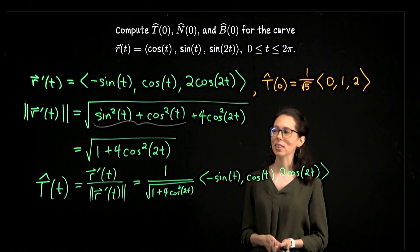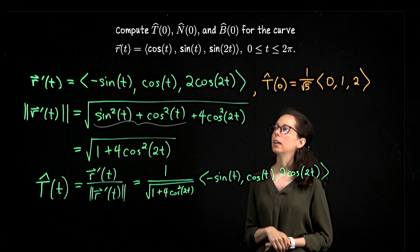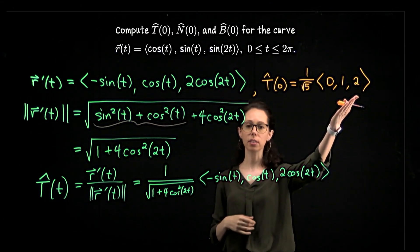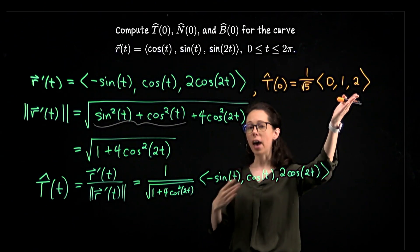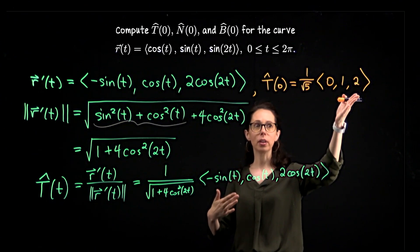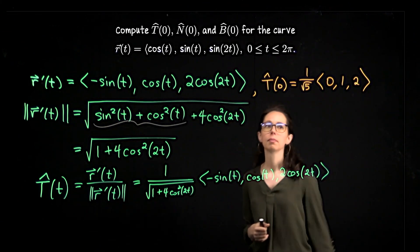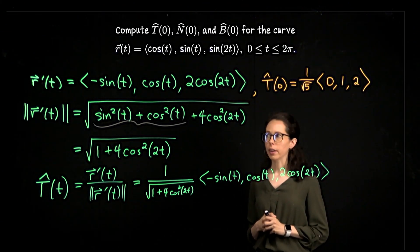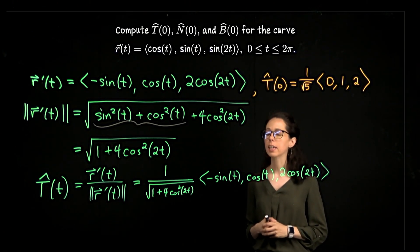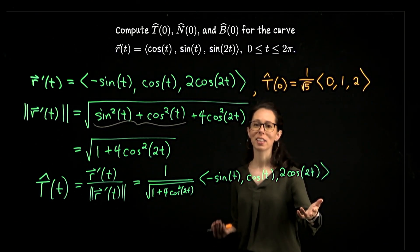The easier way, if we were stopping with just the unit tangent vector, would have been to take the velocity vector, plug in t equals 0 to get the vector (0, 1, 2), and then divide by its magnitude to make it unit length. You could have gone straight to that result. However, we are not stopping there because we also want the unit normal and binormal vectors, and for that I need the general expression for T hat in order to differentiate it.